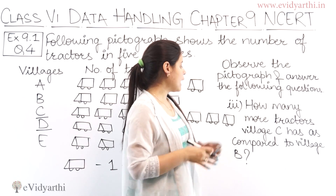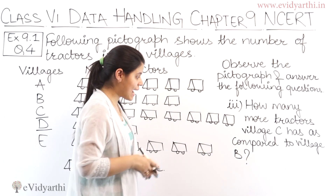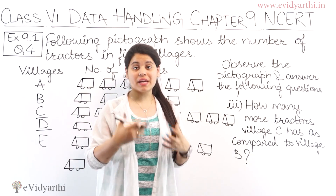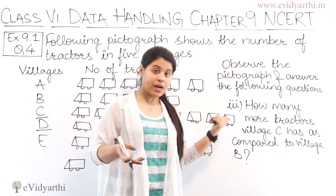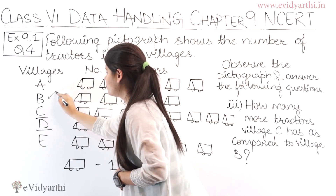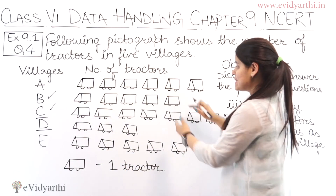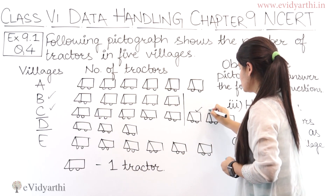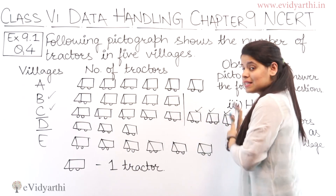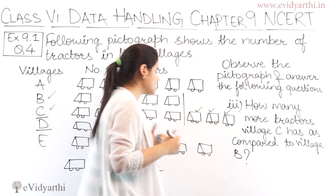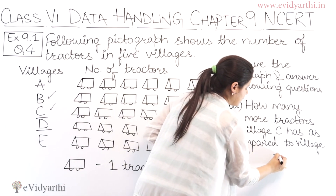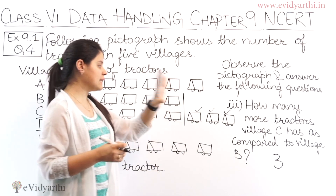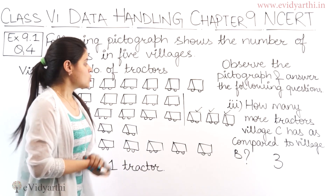Now coming to the third part: how many more tractors does village C have compared to village B? Village B is here and village C is here. When you compare them, the two share some in common, and then in C there are one, two, three more. So there are three more tractors in village C than in village B. You can see this directly from the pictograph without any calculation.